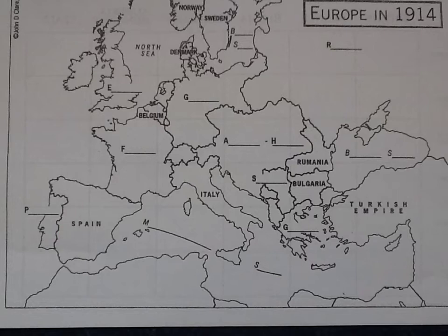Secondly, Europe was divided into two gangs or alliances of countries. The first alliance was the Triple Alliance. That will need to be colour-coded and a key provided. The three countries that made up the Triple Alliance were Germany, Austria-Hungary and Italy. Please make sure this is colour-coded and a key provided.